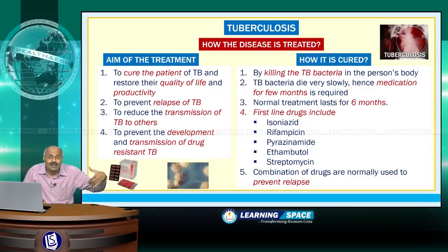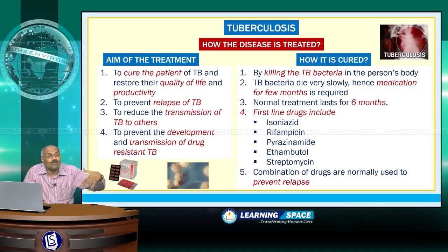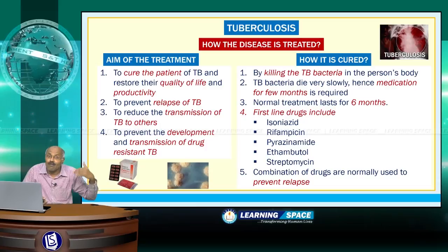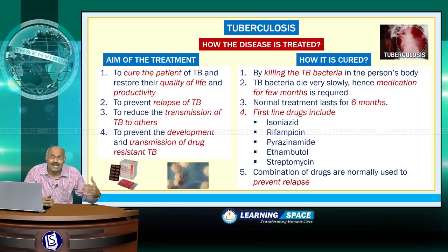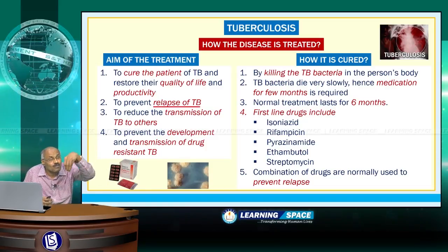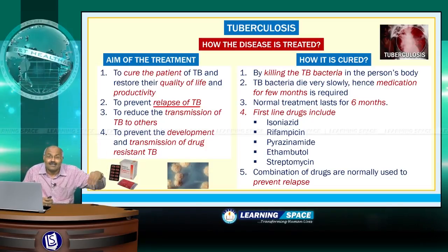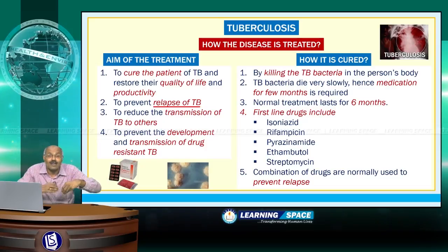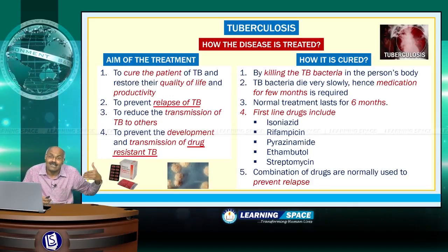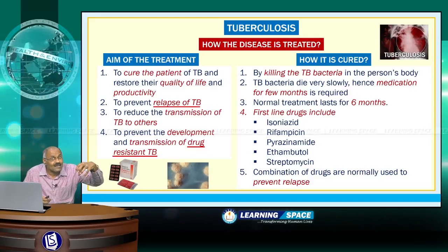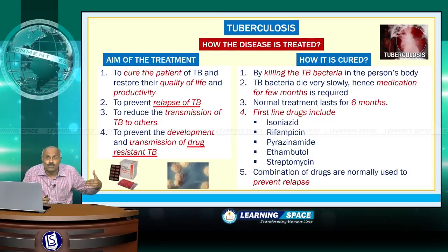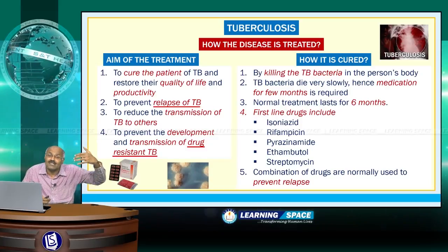There are four main aims of tuberculosis treatment: first, to cure the patient and restore their quality of life and productivity; second, to prevent relapse of tuberculosis; third, to reduce the transmission of tuberculosis to others; and fourth, to prevent the development and transmission of drug-resistant TB. If tuberculosis is not treated properly, it will result in drug-resistant TB.